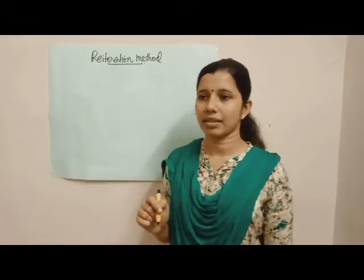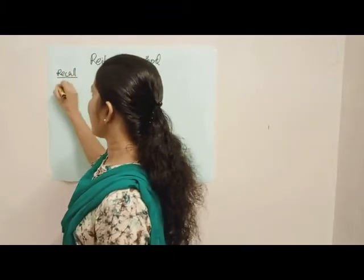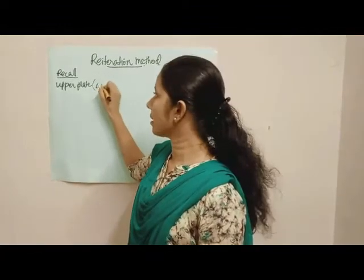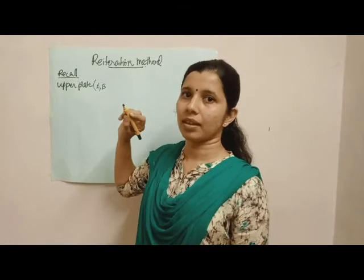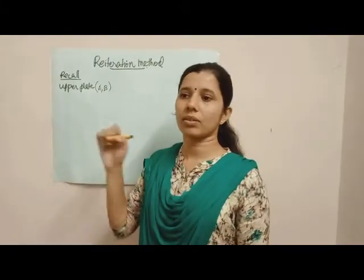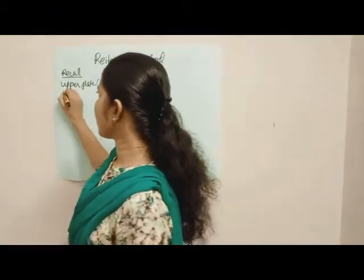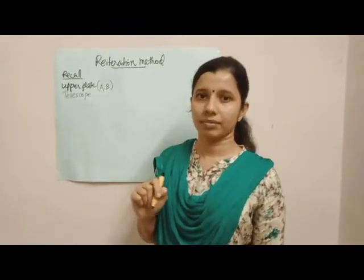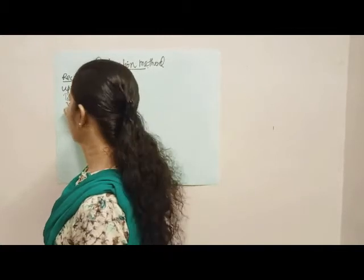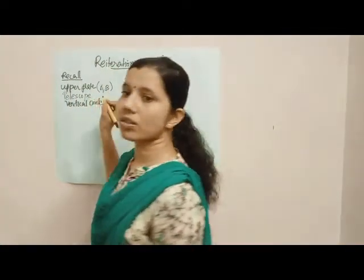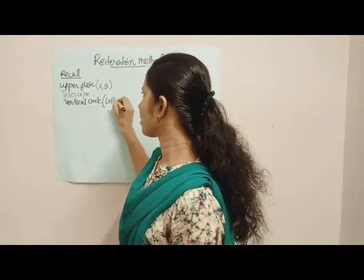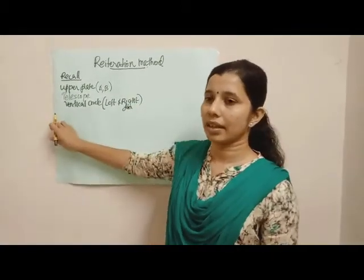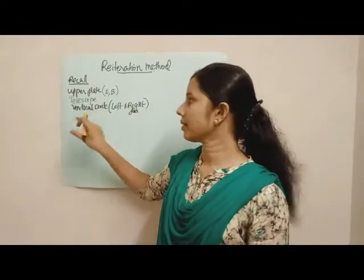What are the different parts of a theodolite? The upper plate of the theodolite has two verniers, A and B — that is a special feature. An upper clamp screw is available to control the motion of the horizontal scale. The second part is the telescope, which is used to bisect different objects or features on the ground. The third part is the vertical circle, which is relevant here because left and right face observations are taken.